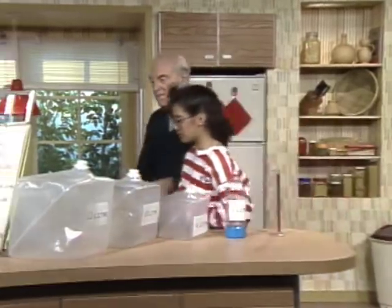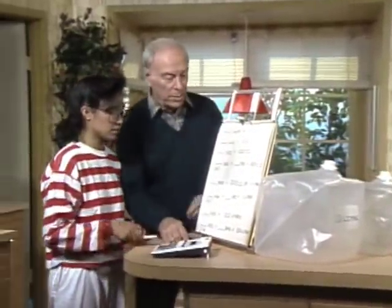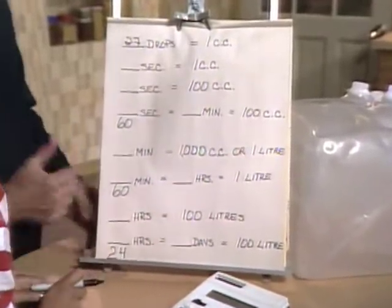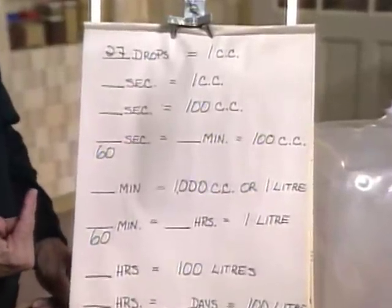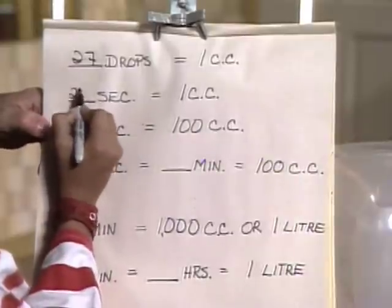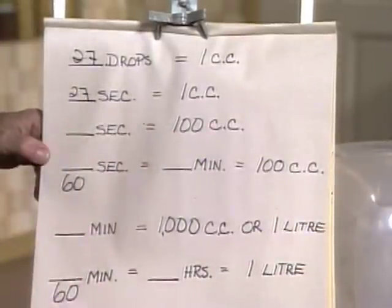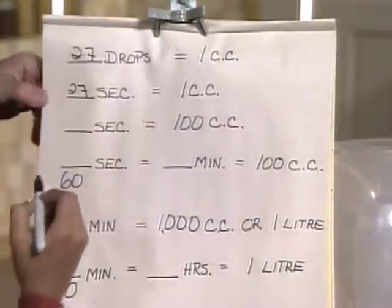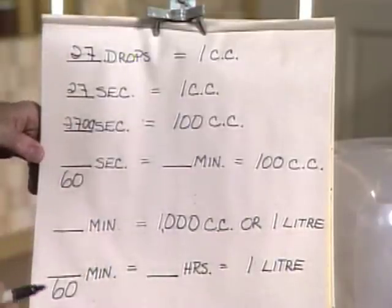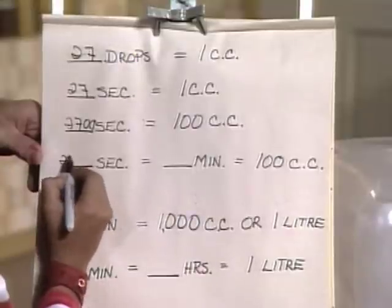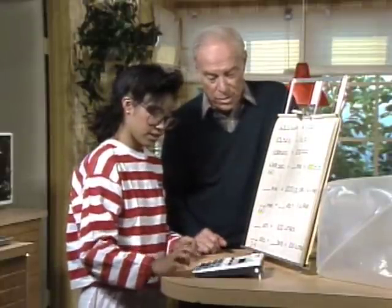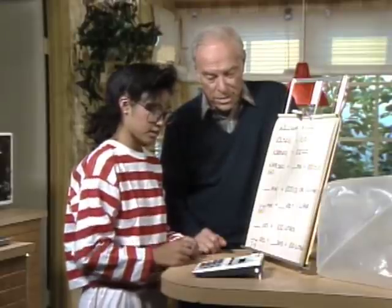Okay, let's actually calculate it and see how close you came. Here's a pen. How many drops were in one cc? 27. Now we said we assumed it was one drip a second, so how many seconds would it take for one cc? 27 seconds. Now multiply by 100 — how many seconds for 100 cc? 2,700. Now we wanted to find that in minutes, not seconds. So 2,700 divided by 60.